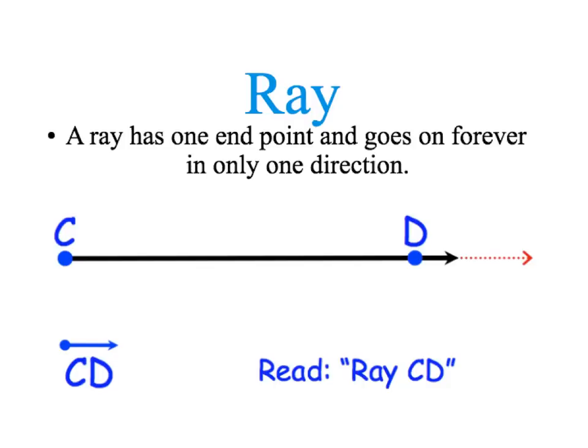Next, let's define what a ray is. A ray has one end point, which you can see is right here. And it goes on forever in only one direction. And that's what this arrow means.